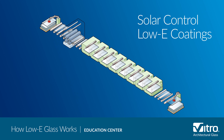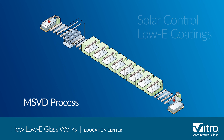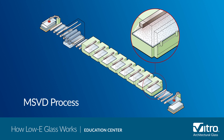Most solar low-e coatings are manufactured using the magnetron-sputtered vacuum deposition, or MSVD, process. The coating is applied offline to pre-cut glass in a vacuum chamber at room temperature. This coating, sometimes referred to as a soft coat, needs to be sealed in an insulated glass or laminated unit and has lower emissivity and superior solar control. The best performing solar control coatings are MSVD and they are ideal for mild to hot climates dominated by air conditioning use.